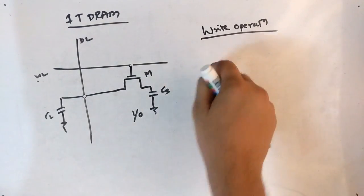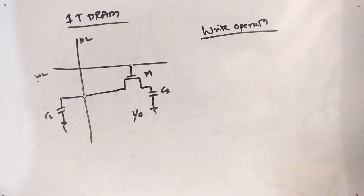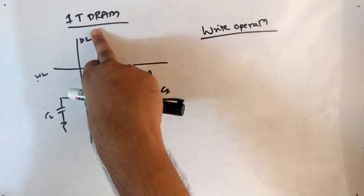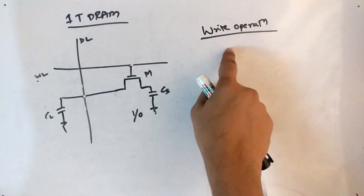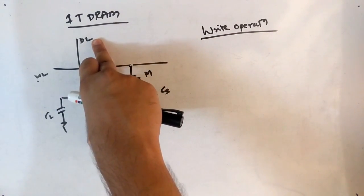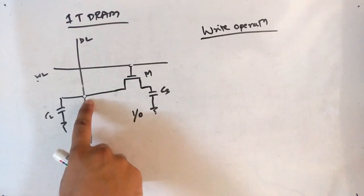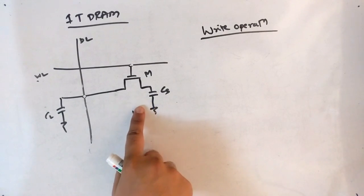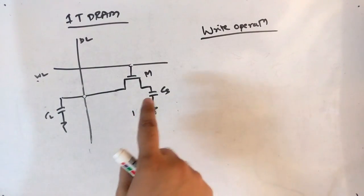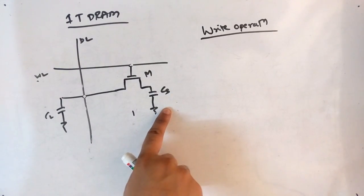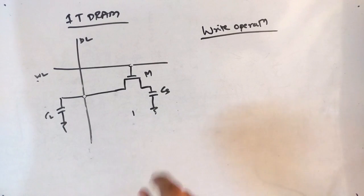Now let's move to the write operation. In the read operation, the data line acted as output; in write operation, the data line acts as the input line. If we place 1 on the data line, the storage capacitor CS gets charged. If we place 0 on the data line, the capacitor gets discharged, so the value stored is 0.